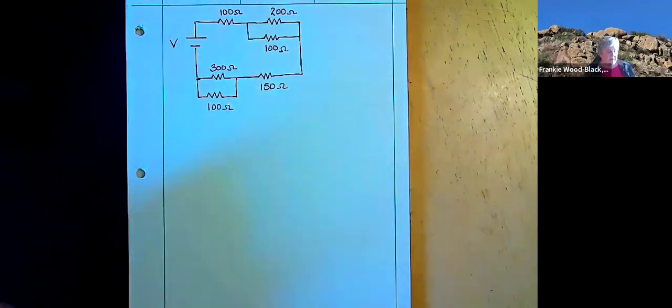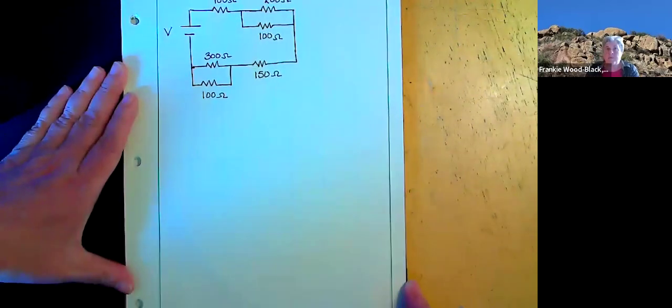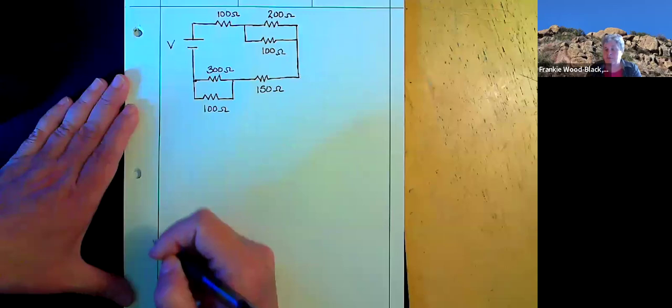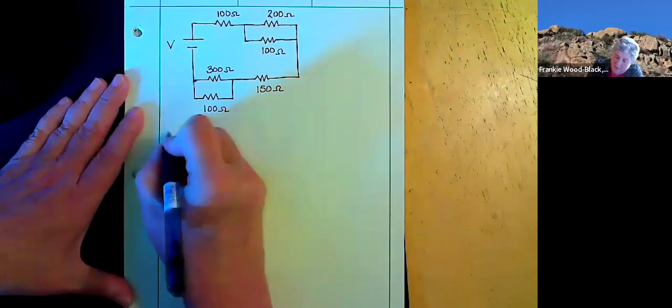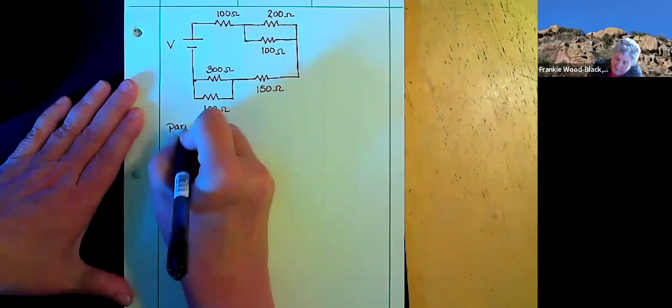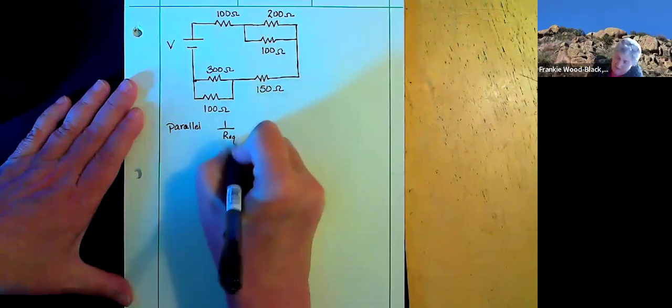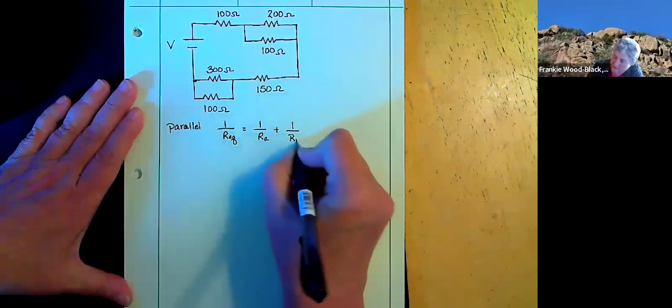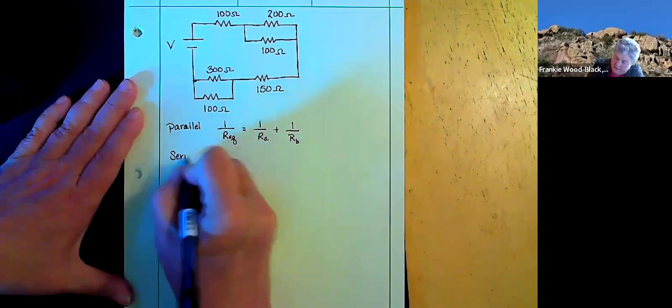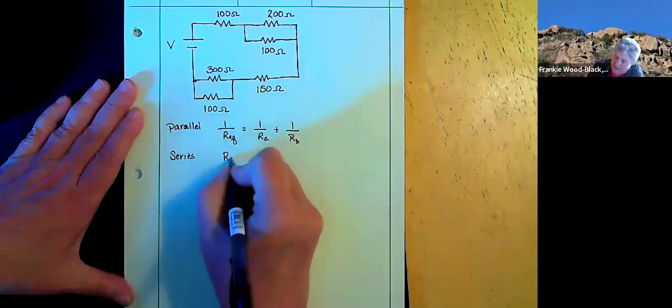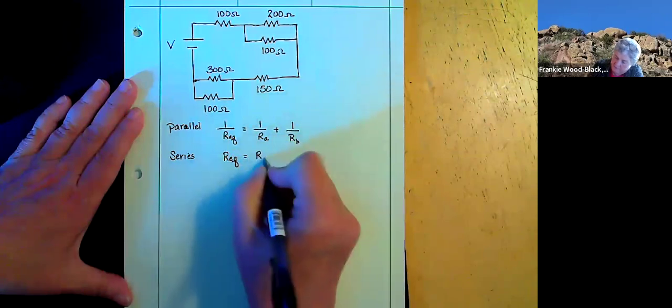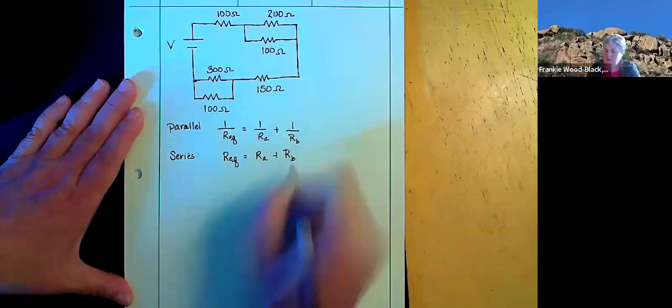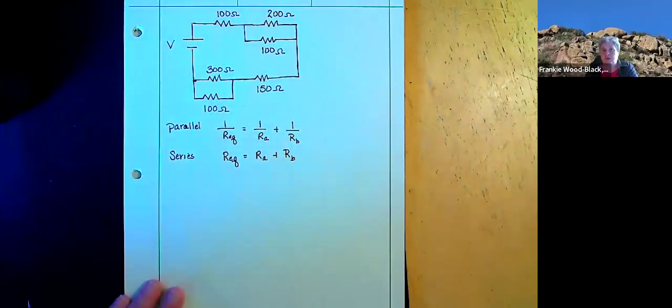We're going to use this problem for a couple of different things. Remember, if I'm in parallel, my equivalent resistance is going to follow this formula. And if I'm in series, my equivalent resistance is going to follow this one. So we're going to look at this circuit and try to figure out what's in parallel and what's in series.